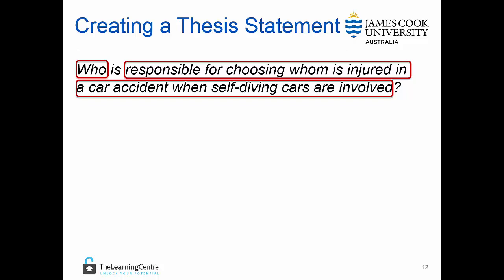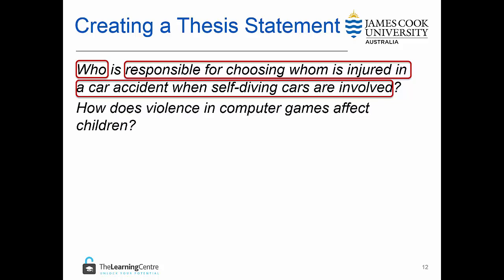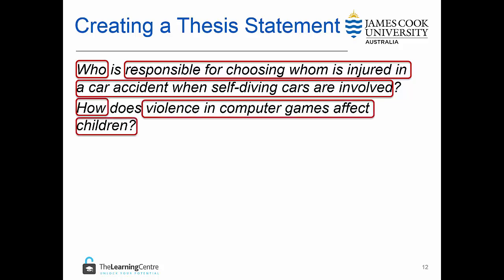In this question we are clearly looking for a person or group of persons in the research. In the second question we have 'how' in the subject position, so the research will be seeking to find an effect or an outcome.